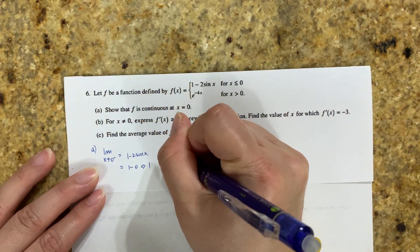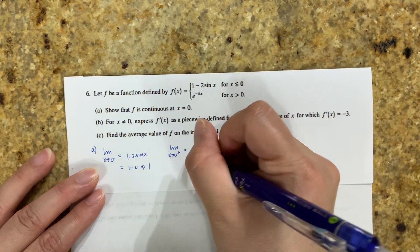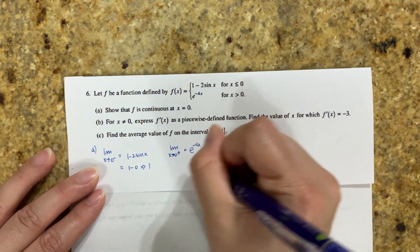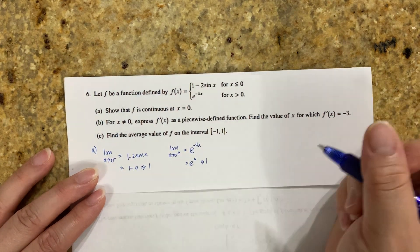The limit as x approaches 0 from the positive side is the right side function, e^(-4x), which equals e^0 = 1. So the limits are equal to each other.